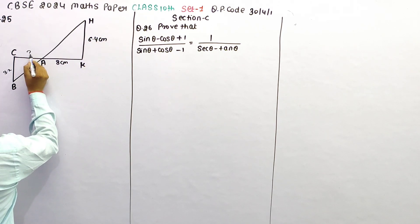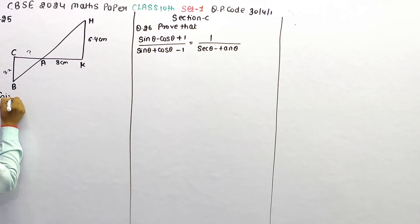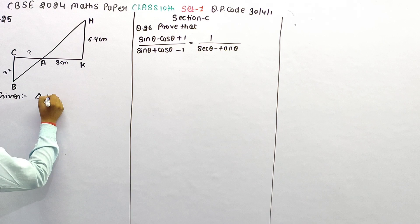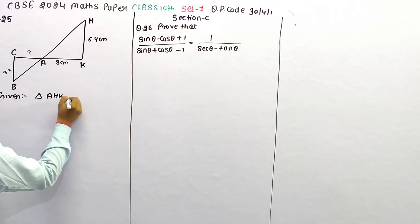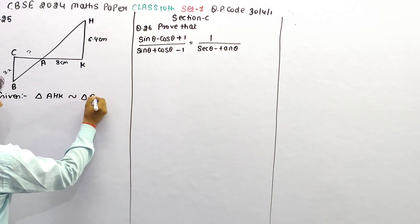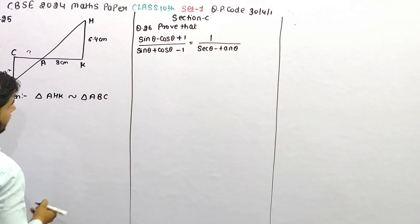We need to find this side. What is given to us? We have triangle AHK similar to triangle ABC; they are similar to each other.